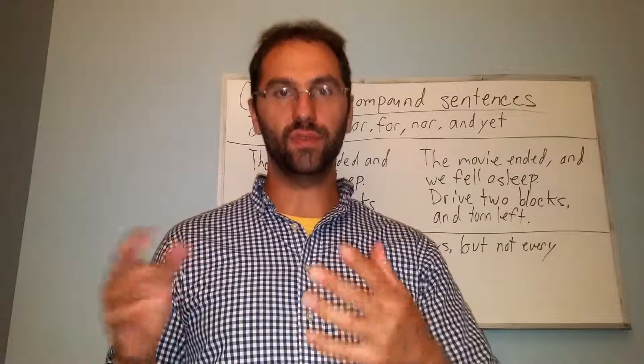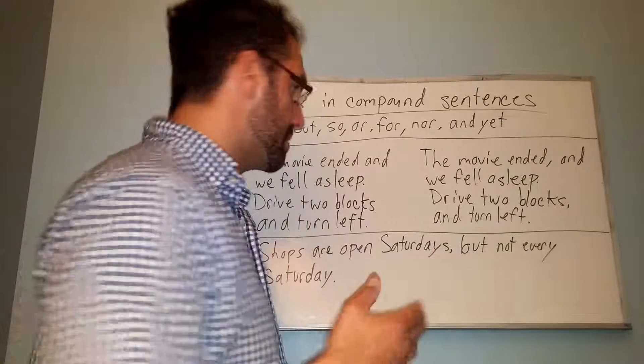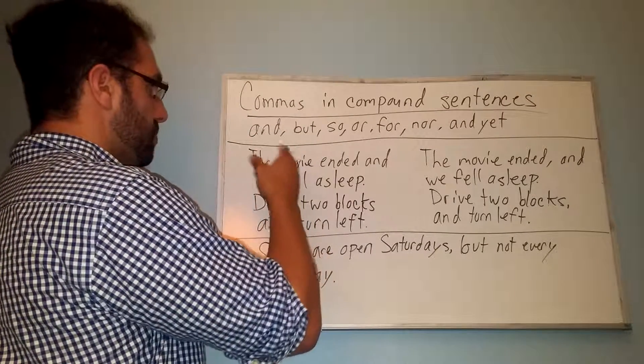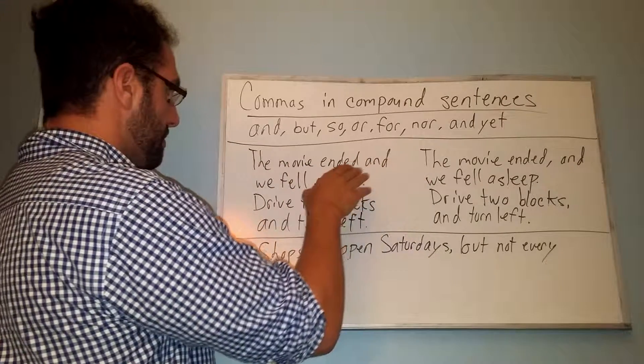So there's two exceptions to the rule of using commas in compound sentences, and we have those two examples here. Now the first one is when the clause is so short, you don't actually need to use a comma, such as,